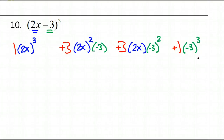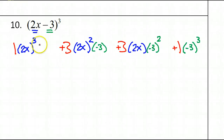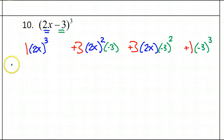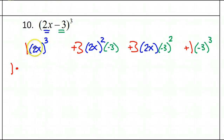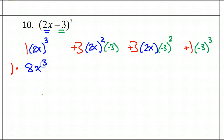My recommendation is to do all your exponents first — that's what I'm going to do right now. I'm not going to multiply anything, I'm just going to do the powers. Looking at this first term: I have 1, that's my coefficient. Now 2x to the 3rd power — I have to do 2 to the 3rd power and x to the 3rd power. 2 to the 3rd power is 8, and x to the 3rd power is just x to the 3rd power. So this gives me 8x to the 3rd power.